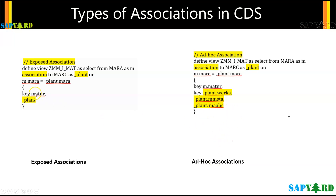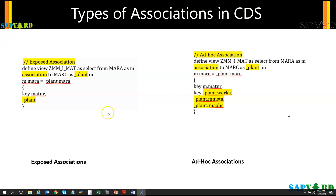To summarize: whenever no fields are mentioned in the output of the CDS and only the association name is present, it is called an exposed association. When you have specific fields of the association in the output, it is called an ad hoc association. Sometimes a developer will put an exposed association at the bottom after also specifying fields, but in that case the join has already happened and it is still considered an ad hoc association, even though you put underscore_plant at the end.